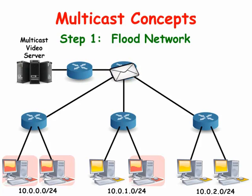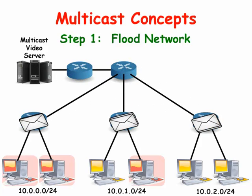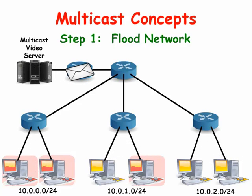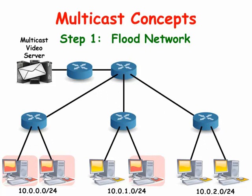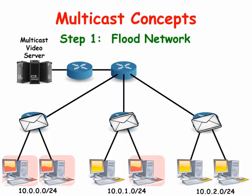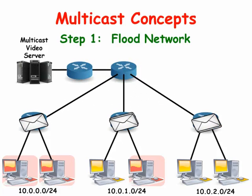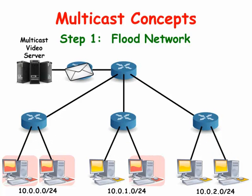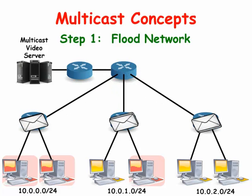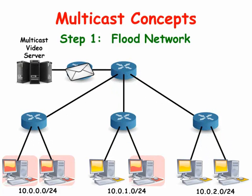In PIM Dense Mode, the multicast traffic is initially flooded throughout the network in order to determine which areas of the network need the traffic. It uses a push method. Here we see the multicast video server sending out multicast packets that flood the network. As the multicast packets flood out of the routers, the routers create a table of unicast IP address to multicast IP address association in the multicast routing table.